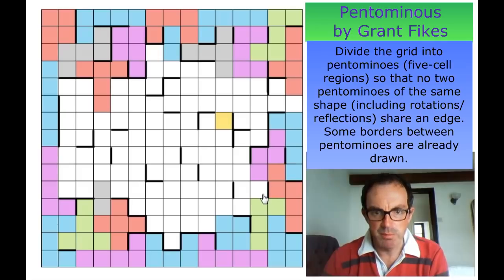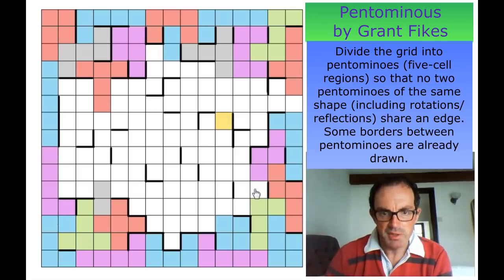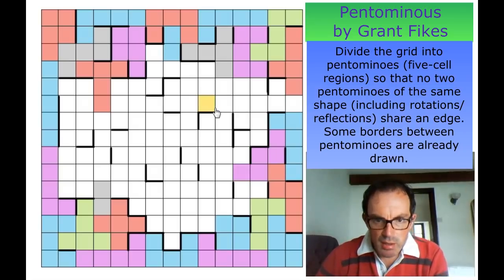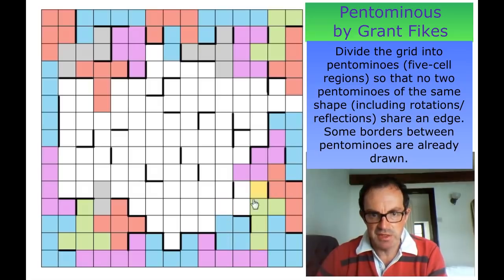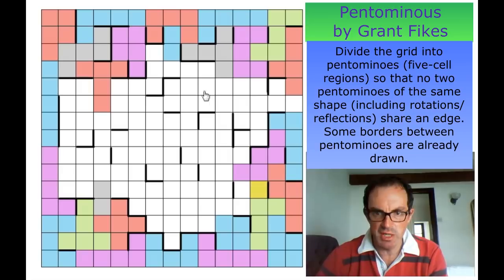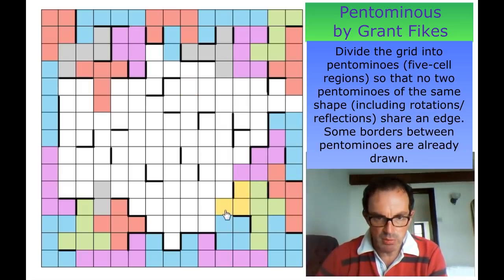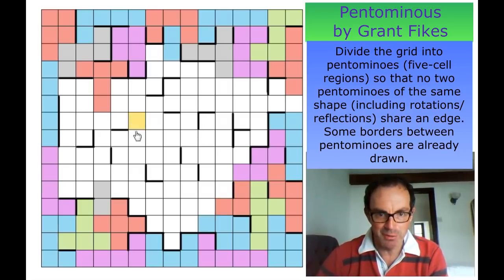It mustn't be an N pentomino, so that's a W pentomino. Now look — if this doesn't take this square it isolates a domino, and we mustn't isolate dominoes — we must isolate pentominoes. So this becomes a Y pentomino. This now has to get out, which fixes the P pentomino's orientation.